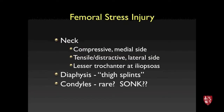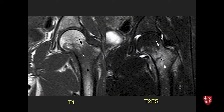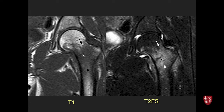Moving to the femur: stress injuries can occur on the medial compressive side of the femoral neck (most common), laterally, in the iliopsoas region near the lesser trochanter, along the femoral shaft, and distally in the condyles. A classic femoral neck stress injury on the medial compressive side shows T1 low signal in the marrow, T2 ill-defined edema, and a low-signal fracture line centered in the edema. This is higher risk — progression could result in a femoral neck fracture requiring internal fixation.